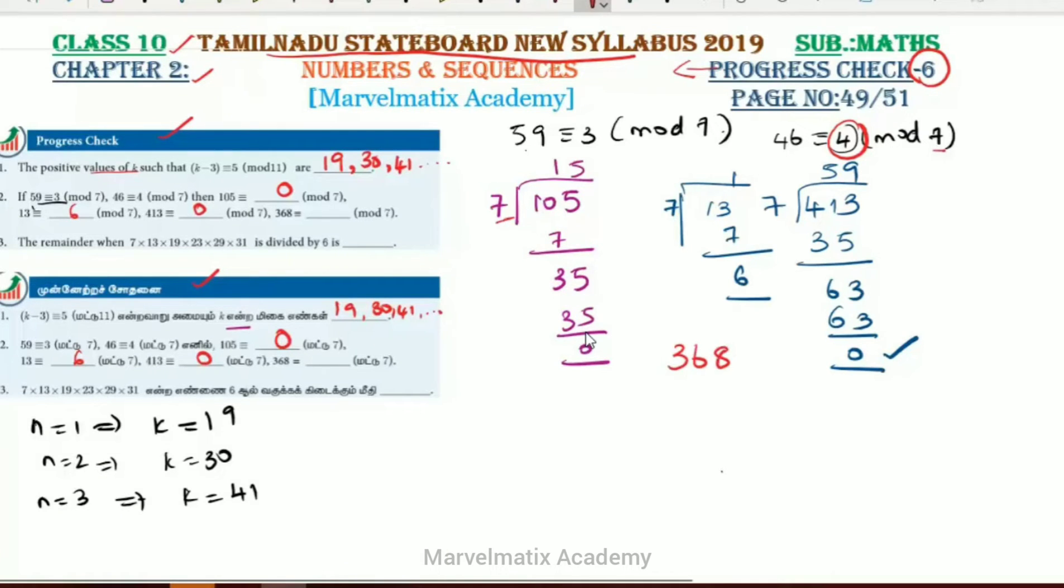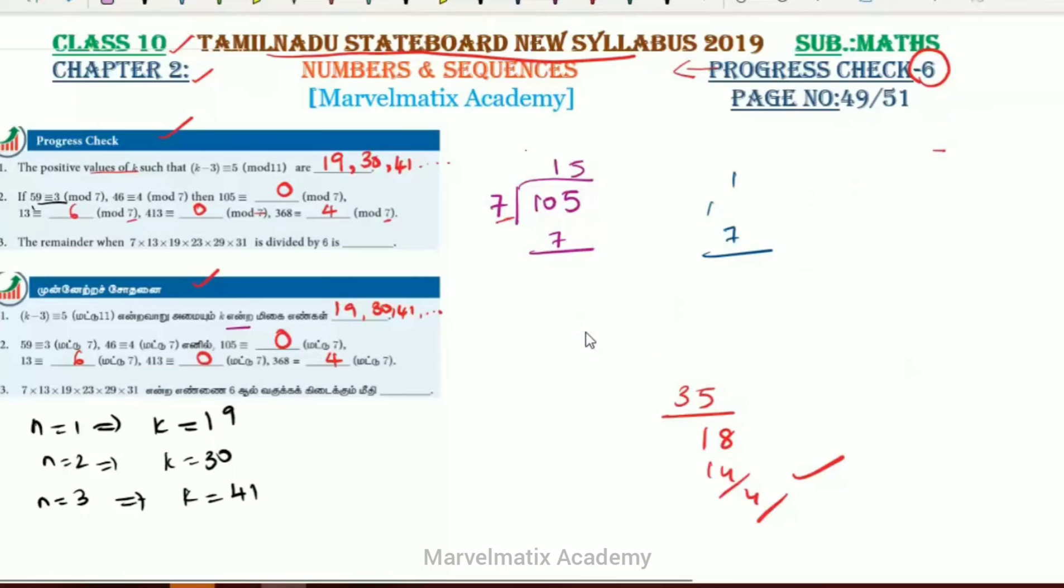This problem is 368 divided by 7. We can work this out: 7 times 2 is 14, 7 times 5 is 35, leaving 18. Then 7 times 2 is 14, leaving a remainder of 4. So the answer is 4. This is the remainder when divided by 7. We multiply the numbers and work through the division systematically.